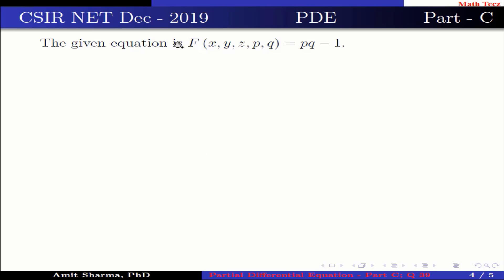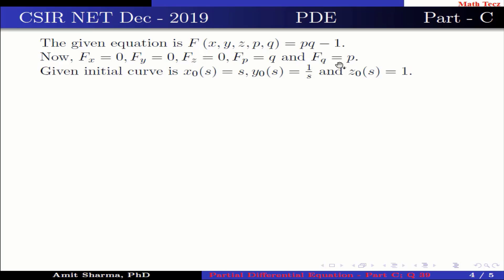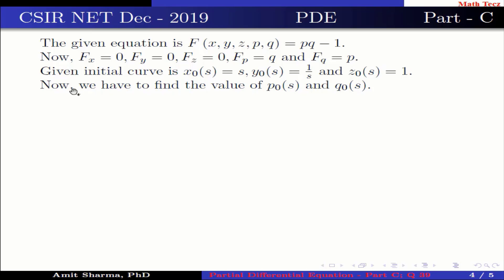The given equation is f(x, y, z, p, q) = pq − 1. Now, fx = 0, fy = 0, fz = 0, fp = q, and fq = p. The given initial curve is x0(s) = s, y0(s) = 1/s, z0(s) = 1. Now we have to find the value of p0(s) and q0(s).